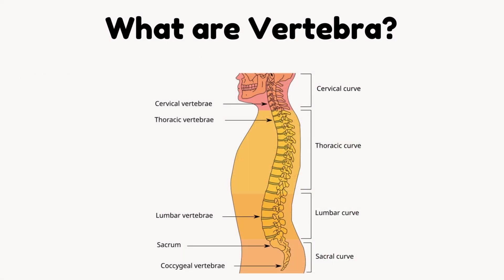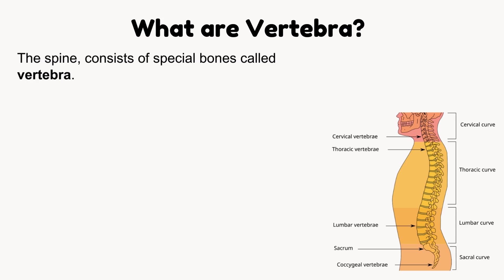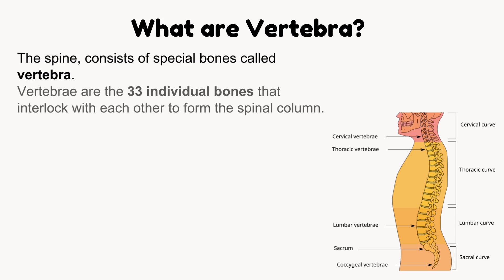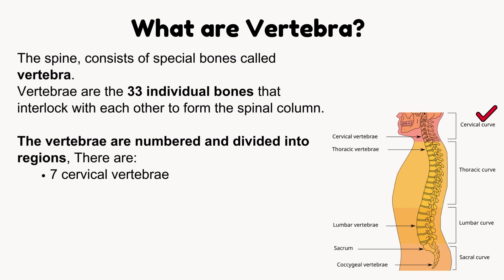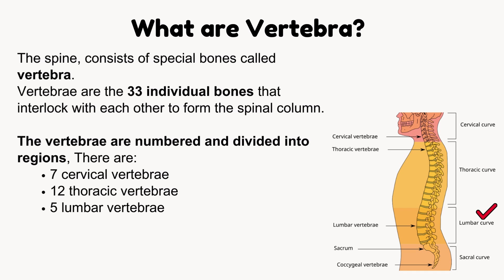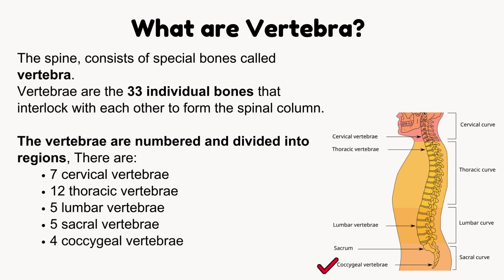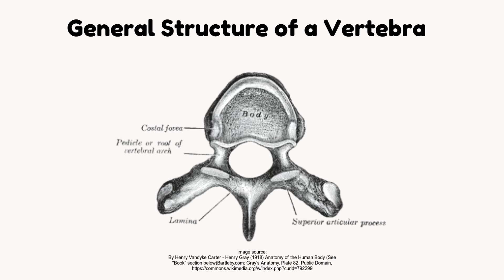What are vertebrae? The spine consists of special bones called vertebrae — the 33 individual bones that interlock with each other to form the spinal column. The vertebrae are numbered and divided into regions: 7 cervical vertebrae, 12 thoracic vertebrae, 5 lumbar vertebrae, 5 sacral vertebrae, and 4 coccygeal vertebrae.